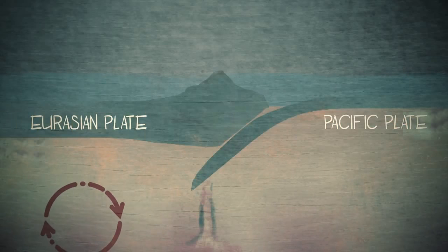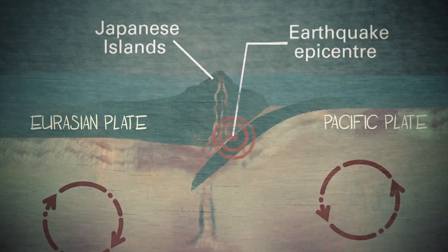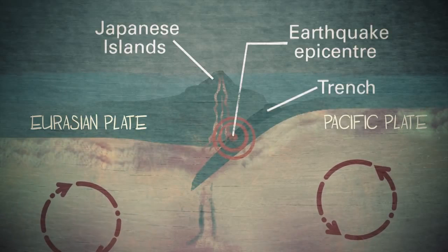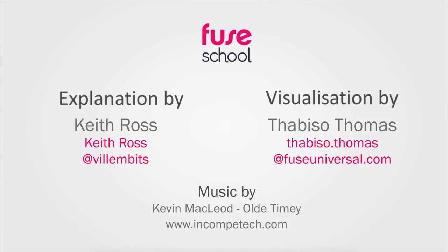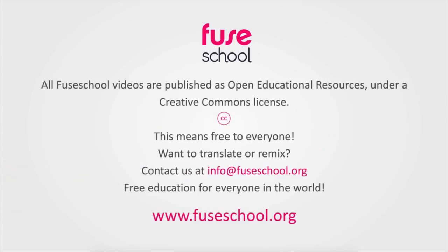And as the Pacific plate is subducted under the Asian plate the islands of Japan with many earthquakes and volcanoes and the deep ocean trench to the east were formed and are still being formed.